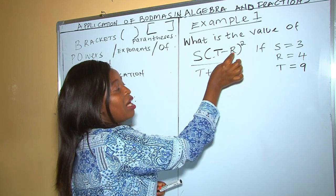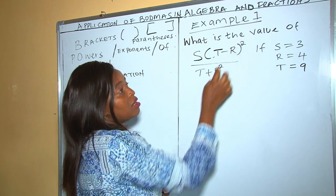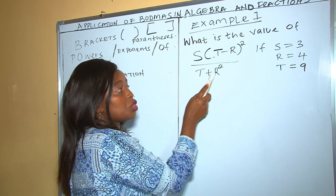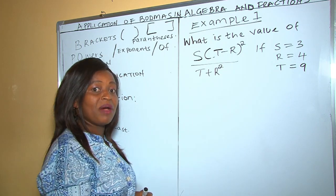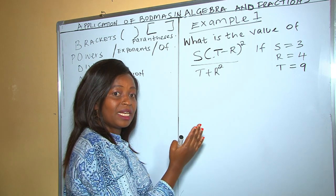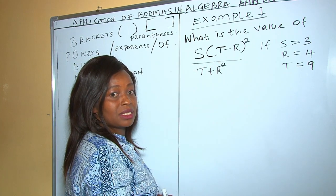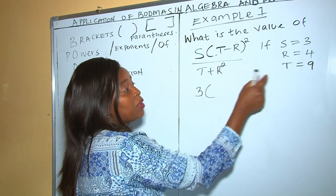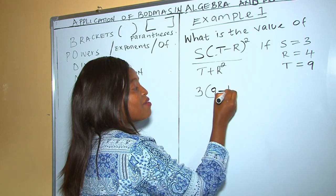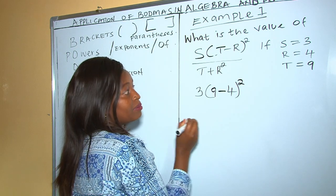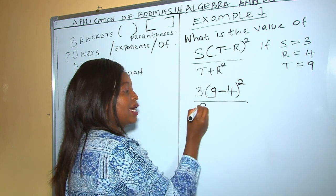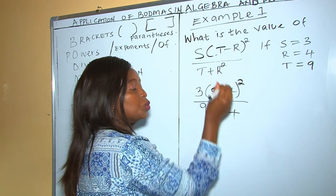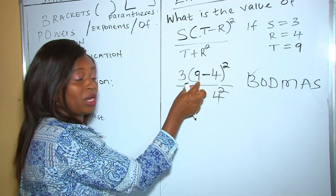How many operations are here? We have brackets (or parentheses), subtraction, exponents or powers — power 2 at the denominator — addition, and also powers elsewhere. Because it's algebra, the first thing we do is replace the letters with the real numbers: where we have s we put 3, where we have t we put 9, take away r which is 4, and remember to put the square. At the denominator, t is 9 plus r which is 4, and that 4 is squared — it has power 2.